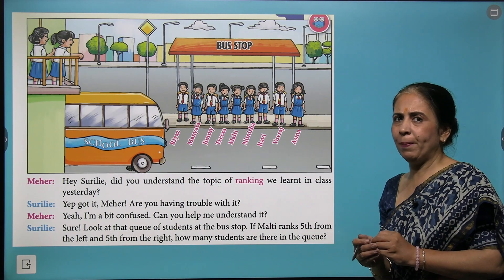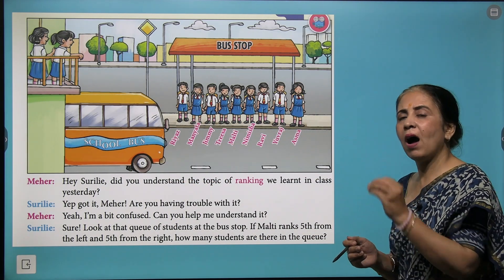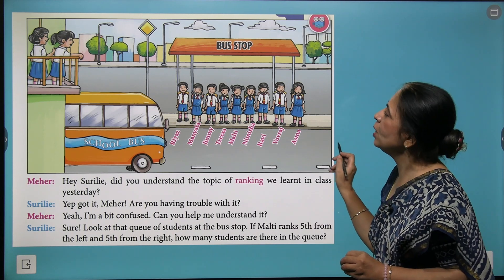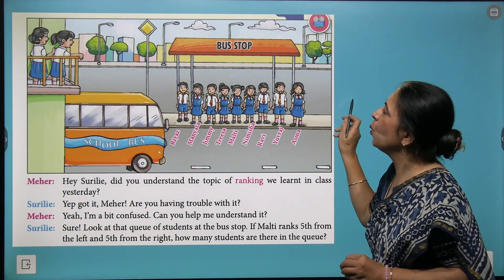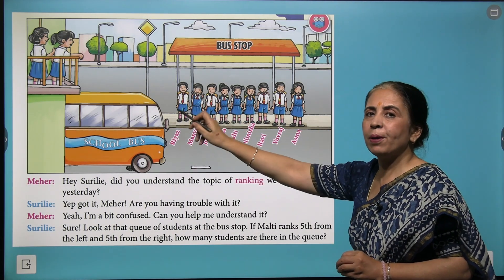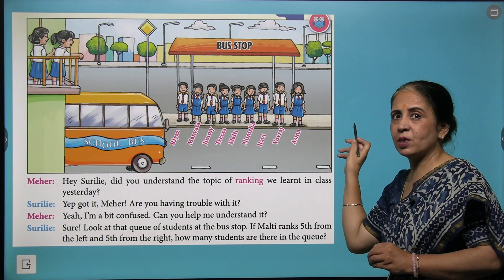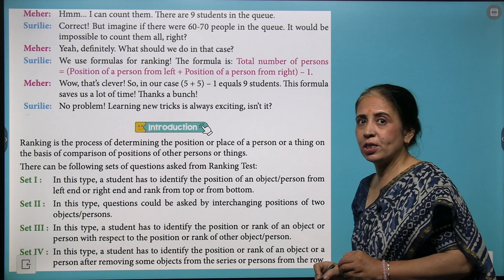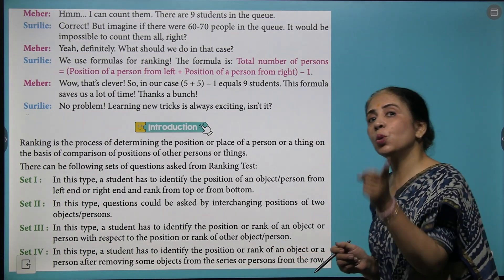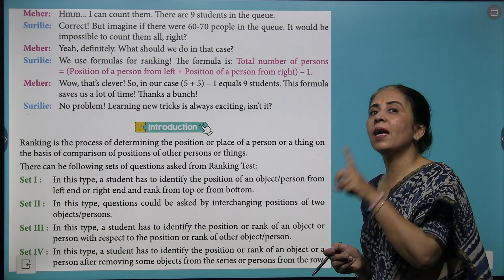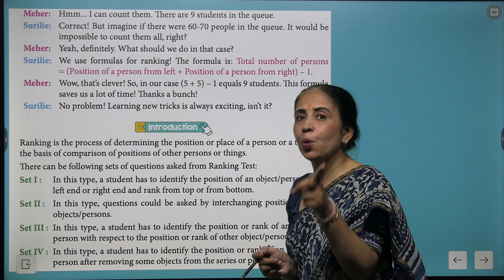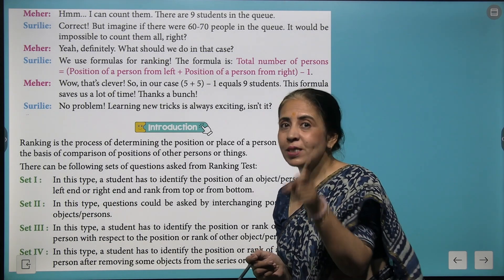After this, Surili taught her that when you have something in a row, sometimes you count from the leftmost side, sometimes from the rightmost side, and they are very interesting questions. She further told, once you do questions on ranking, it improves your neural connections as well. The same thing is going to happen with you when you do ranking questions.